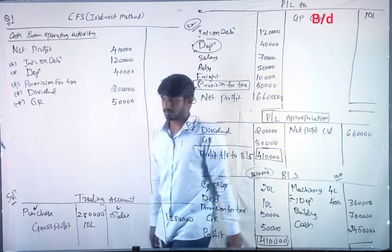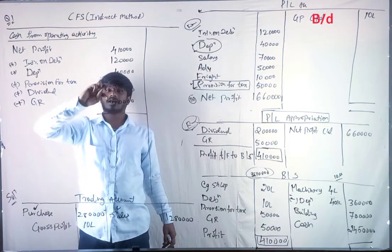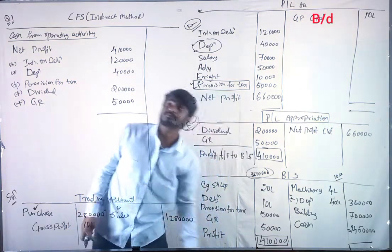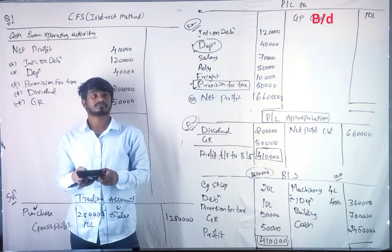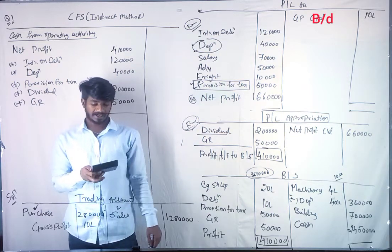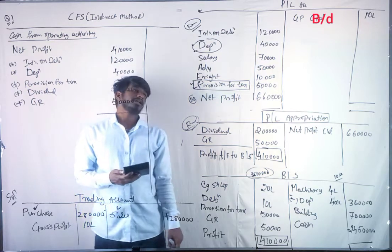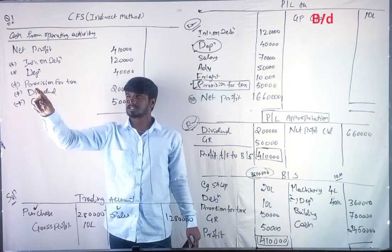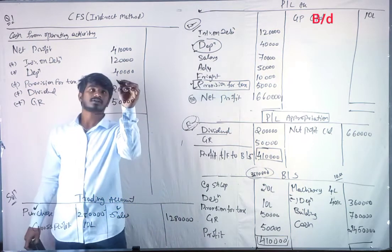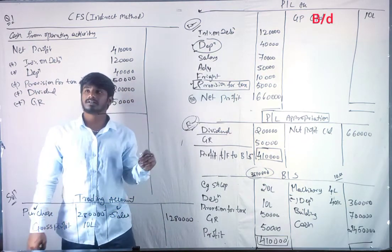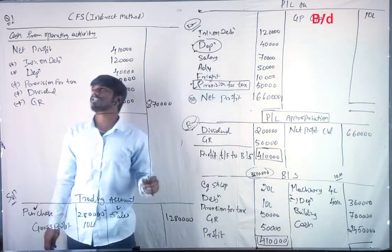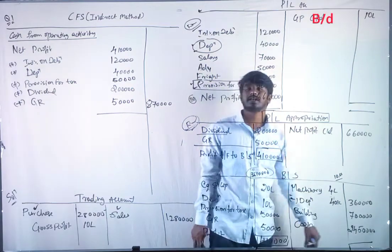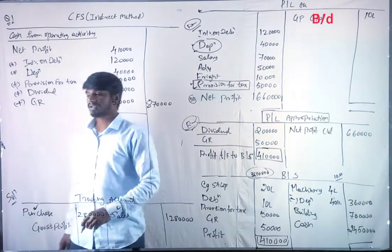Net profit is Rs. 4,10,000. Adding back: interest on debenture Rs. 1,20,000, depreciation Rs. 40,000, provision for tax Rs. 50,000, dividend Rs. 2 lakh, general reserve Rs. 50,000. Cash from operating activity = Rs. 8,70,000. Then for investing activity: machinery Rs. 4 lakh and building Rs. 7 lakh — cash going out, so we minus both.